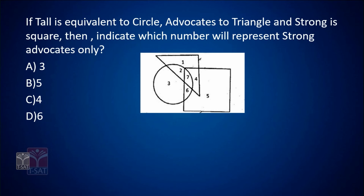The first question says: if tall is equivalent to circle, advocates to triangle, and strong is square, then indicate which number will represent strong advocates only. Here we have a diagram with three different geometric figures — one is the circle, one is the triangle, and one is the square.